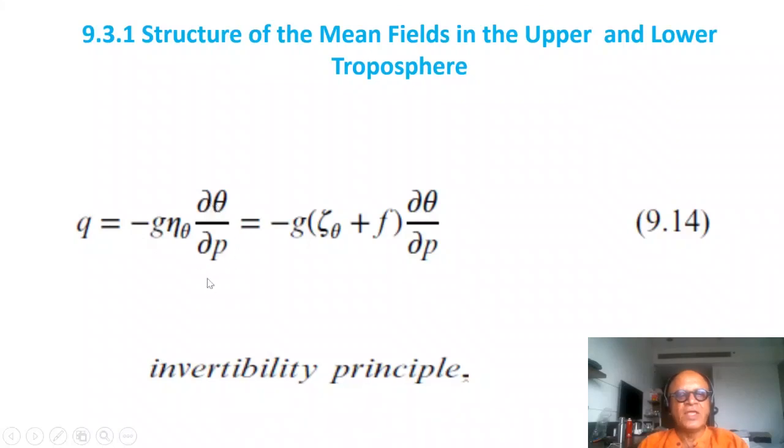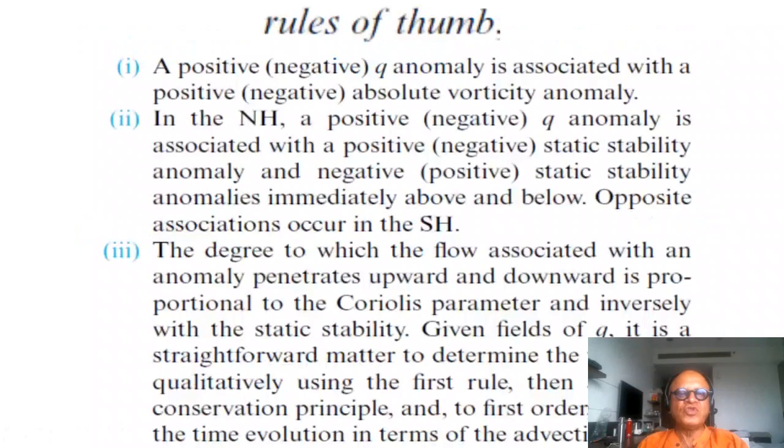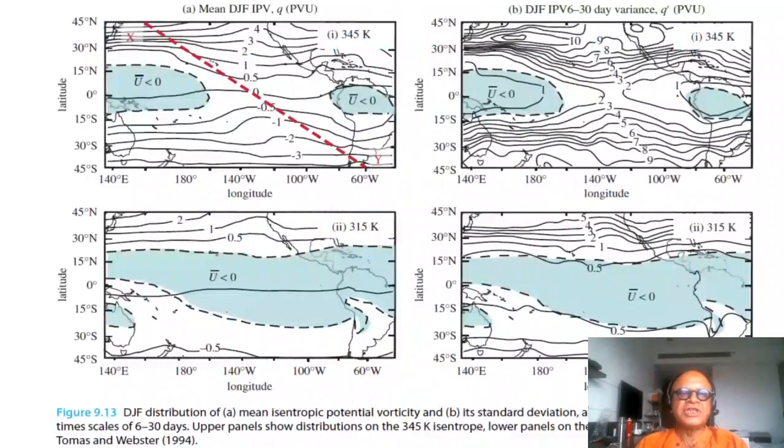It is defined as -g times vorticity eta_theta times dθ/dp. This is the vertical gradient in the pressure coordinate, and eta_theta is the total vorticity with zeta in the isentropic coordinate—the relative vorticity plus the planetary vorticity times the gradient in the vertical. This has what is called an invertibility principle.